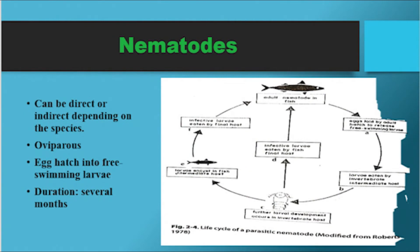Nematodes can be direct or indirect depending on the species. They are oviparous — eggs hatch into free-swimming larvae — and their duration is several months after infecting a host. In their life cycle: adult nematodes in fish lay eggs, which hatch and are released as free-swimming larvae. Larvae are eaten by invertebrates as the intermediate host, and further larval development occurs within the invertebrate host. Larvae then encyst in fish and become infective larvae eaten by the final host, the adult fish, repeating the cycle.